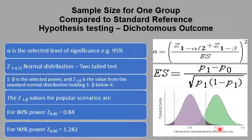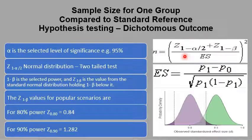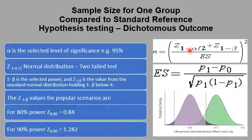Moving now to the next scenario: we want to compare results obtained from a single group study — a proportion or ratio from this single group — to a known standard. In this study there is no control group, but we compare our results to a known, accepted, published standard. For this we have a new equation, and estimation of the sample size depends on three things.